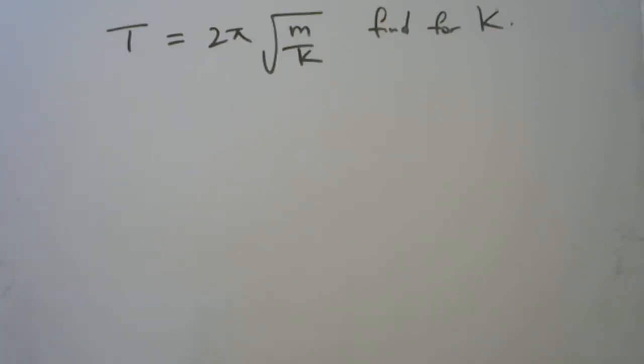Okay guys, so I'll try to rearrange the subject of the formula here to find for k in this question. T is equal to 2π times the square root of m upon k.